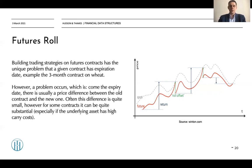A problem occurs at the expiry date: there is usually a price difference between the old contract and the new one. Often this difference is quite small, but for some products it can be quite substantial, especially if the underlying asset has high carry costs. On the right-hand side you can see a plot showing how a futures contract expires and the next contract becomes active. We call these front-month contracts or active futures contracts.